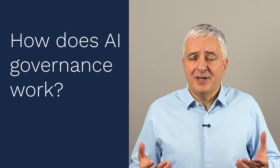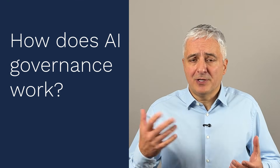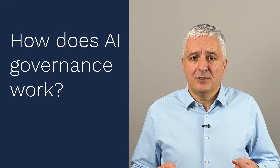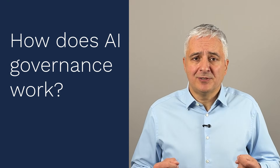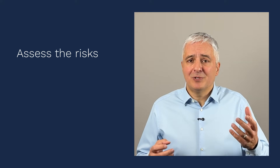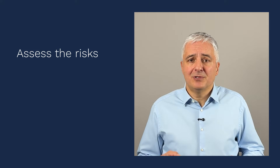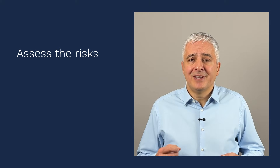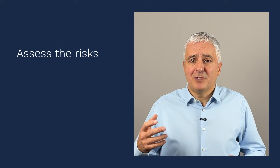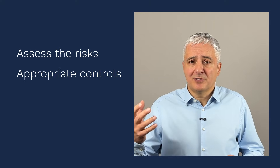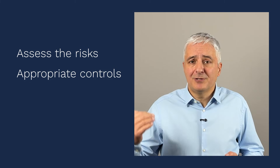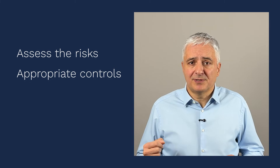How does AI governance work according to ISO 42001? The main principle is that companies need to assess the risks related to AI systems and then apply appropriate controls to decrease those risks. Let me give you an example.